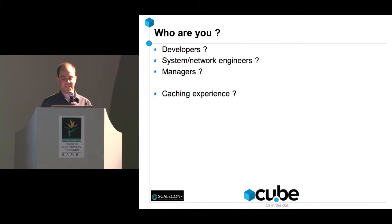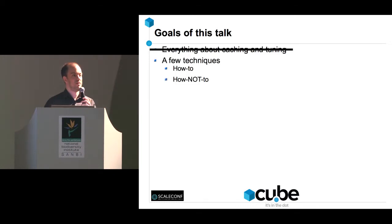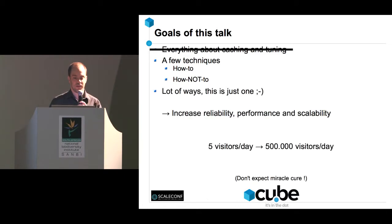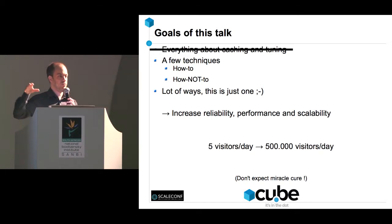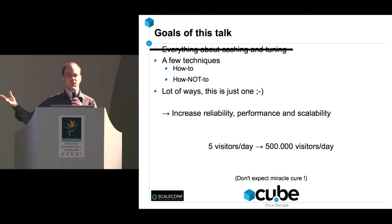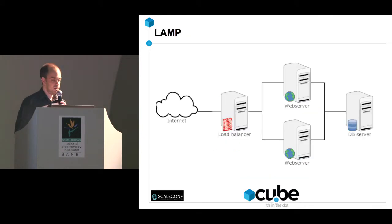The goals of this talk: I'm going to tell you everything about caching and tuning — well, not really, it's just not possible in 45 minutes. I'm going to describe a few techniques, a lot of how-to, and especially how NOT to do things. Some of what I'll explain is controversial. The goal is basically to increase reliability, but mostly performance and scalability — to take a site from five visitors a day to five hundred thousand visitors a day without rebuilding from scratch.